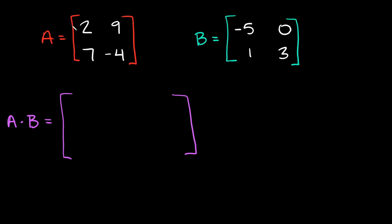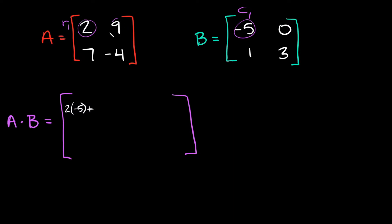The way you start filling it out is you always start with row one and column one. You basically go down the row, down the column. So we're going to start with two times negative five, and then we're going to add that — again going down the row, down the column — nine times one.